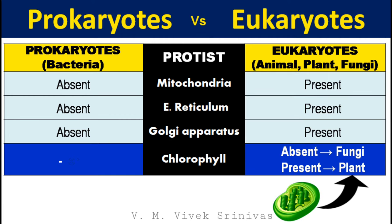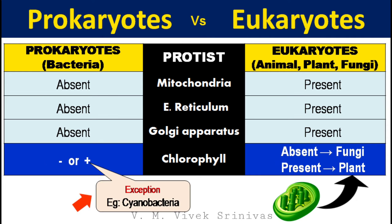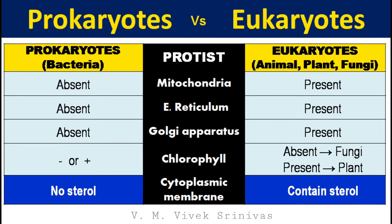Membrane-bound organelles like mitochondria, endoplasmic reticulum, and Golgi apparatus are present in eukaryotic cells but absent in bacterial cells. Chlorophyll is present only in plants; it is generally absent in fungi and bacteria, with the exception of certain bacteria like cyanobacteria. In prokaryotes, the cytoplasmic membrane does not contain sterol, but in eukaryotes, the cytoplasmic membrane contains sterol.